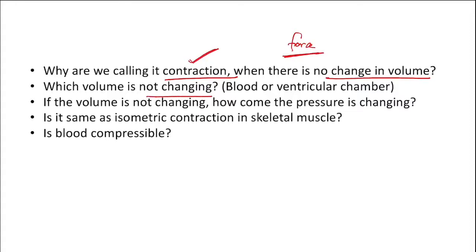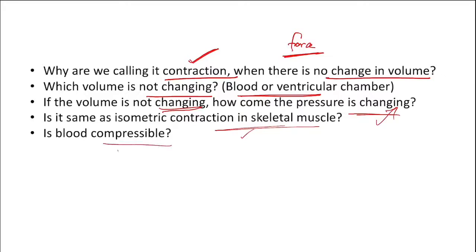Which volume is not changing — blood or the ventricular chamber? Actually both are the same, because the volume of the ventricular chamber equals the blood volume within it. If volume is not changing, how is pressure changing? There is a negligible decrease in volume — about 0.001% — that causes the pressure to increase. Is it the same as isometric contraction in skeletal muscle? There are both similarities and differences. Is blood compressible? Practically and physiologically, no.